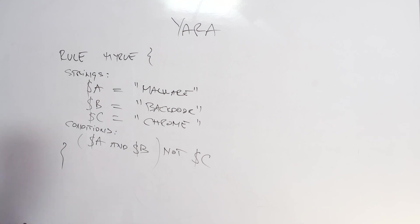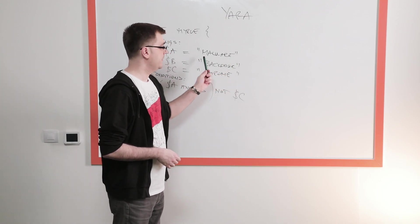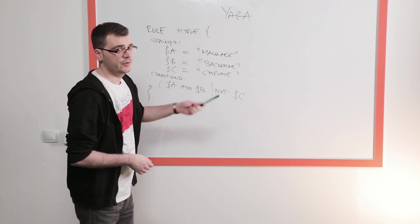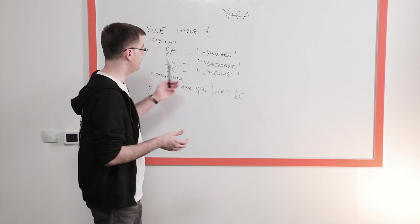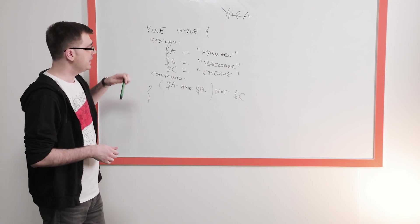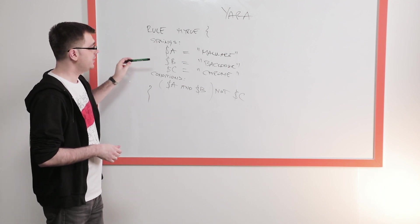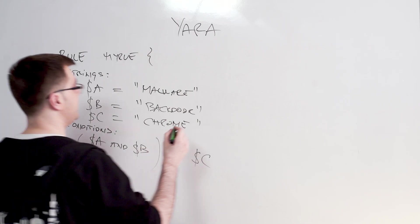So writing good Yara rules is really, really difficult. And granted, this is not a good example. So in the real world, you really do not want to be writing rules which are just plain strings. The reason for that is a lot of things can have written in them, word, malware and backdoor and Chrome. And they don't necessarily have to do and to have anything to do with the actual intent of our rule being malicious. So writing good rules for us is creating rules which match contextually, which match on the code.